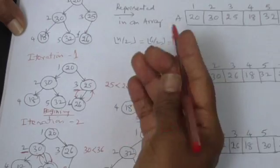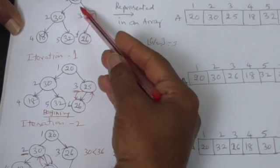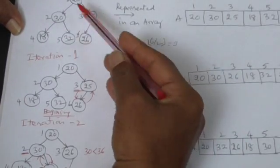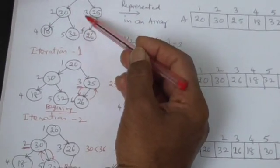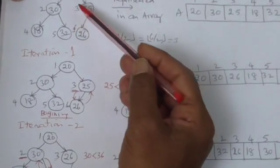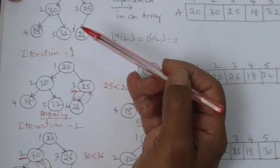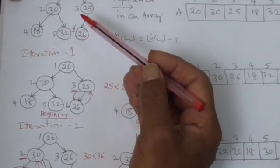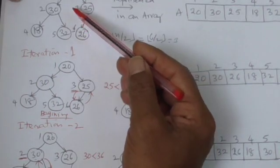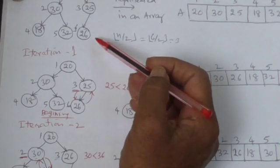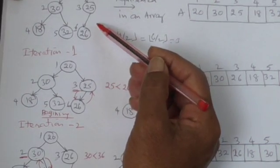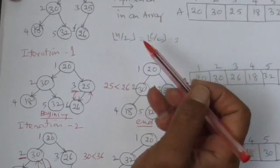But for a tree which is already satisfying the structure property that it should be a complete binary tree, this is satisfying the structure property. The only thing what we have to now make certain is that order property is satisfied. So this binary tree, a complete binary tree, should be converted to a max heap.